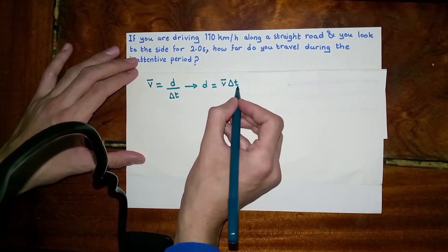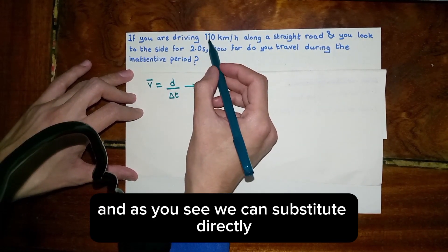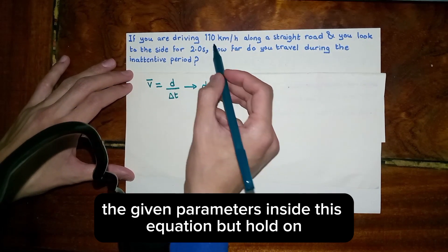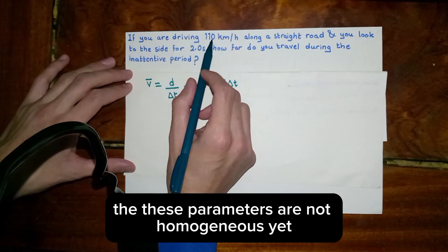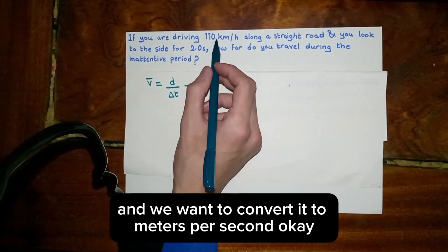As we see, we can substitute directly the given parameters inside this equation. But hold on - these parameters are not homogeneous yet. The velocity is written using units of kilometers per hour, and we want to convert it to meters per second.